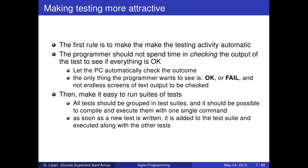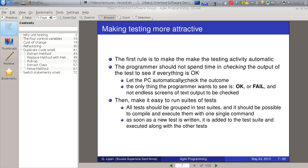The first thing to do is to try to automate testing. The programmer should not spend time checking the output of the test manually. The check that a test produces the correct result or fails should be done automatically by the PC — the programmer should only see 'OK' or 'FAIL'. The second important thing is to group all tests into a suite and compile and execute them with one single command. As soon as a new test is written, it is added to the test suite and executed along with the others.